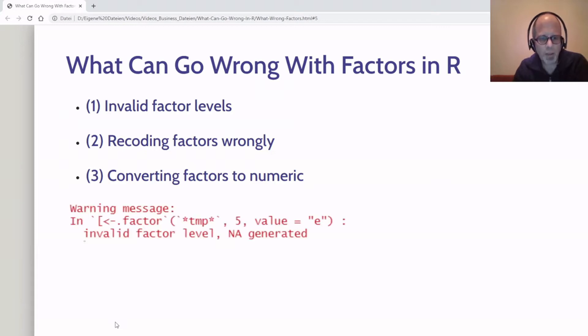The trick here is that for the first case we get a warning at least, so we may assume something didn't go as expected. The warning is 'invalid factor level, NA generated.' For the second and third case we don't get a warning or error, so we have to be very careful.